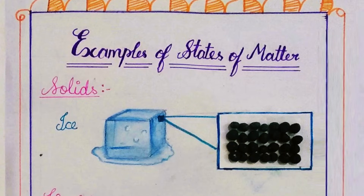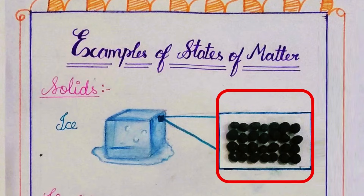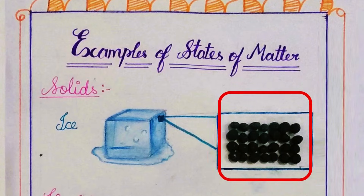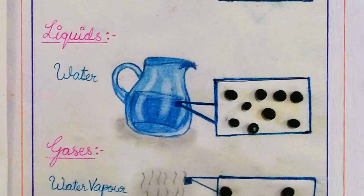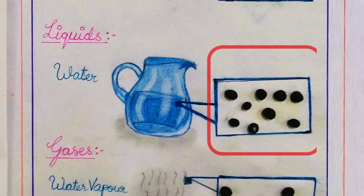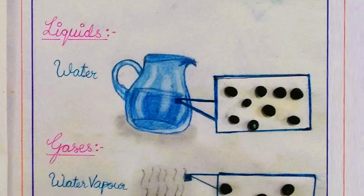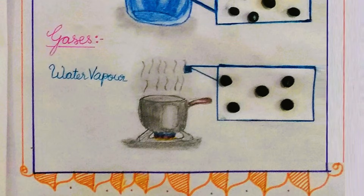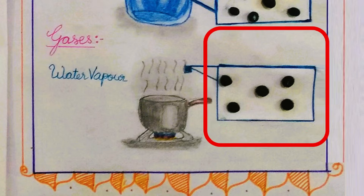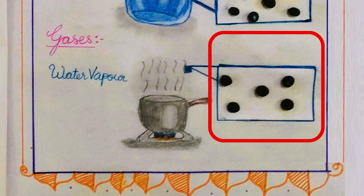Examples of states of matter: Ice is an example of solids — this is the molecular representation of solids. Water is an example of liquids — this is the molecular representation of liquids. Water vapor is an example of gases — this is the molecular representation of gases.